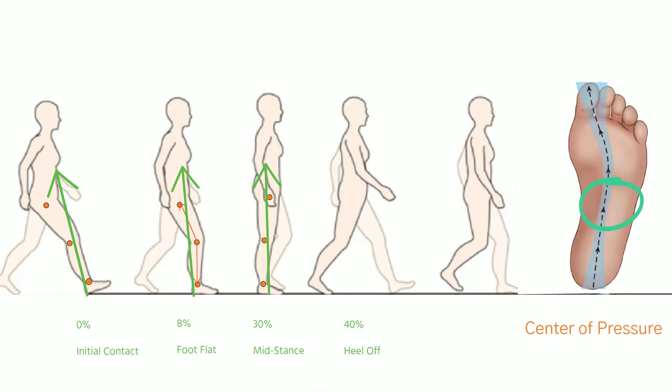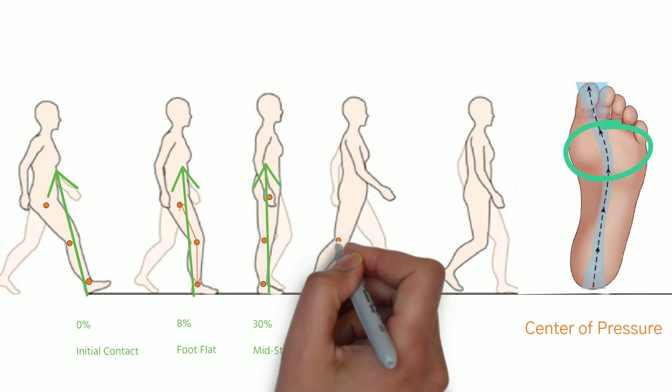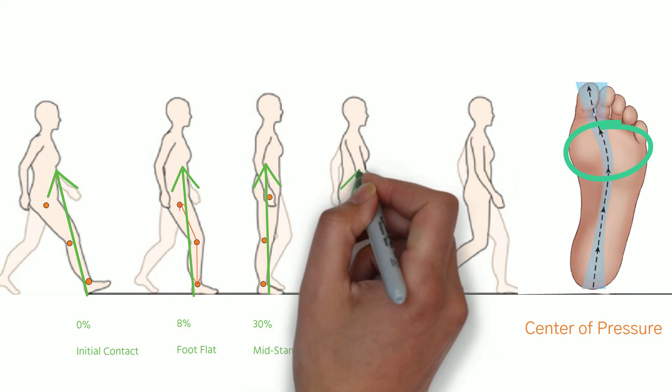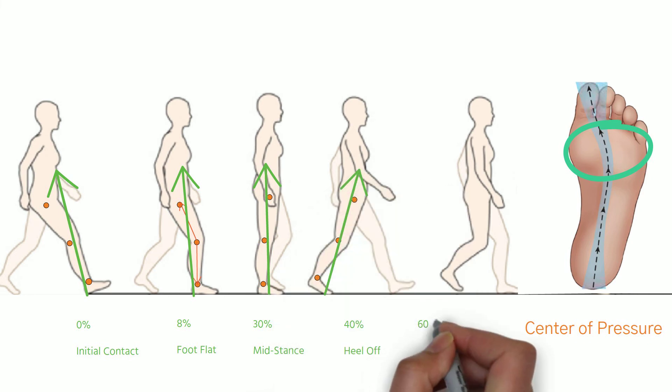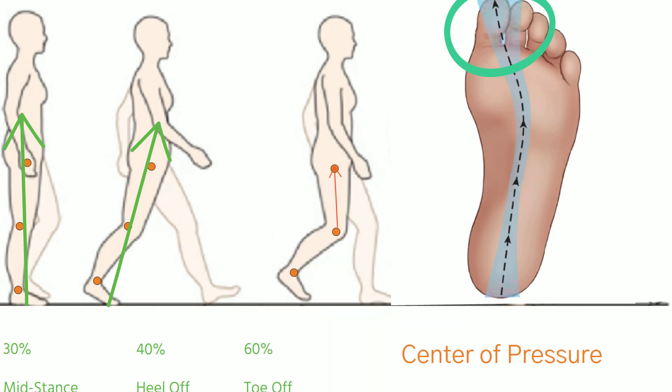Following mid stance, the ground reaction force does not change for the ankle or the hip. It continues to travel anterior to the ankle and posterior to the hip. While the only change that occurs is at toe-off for the knee joint. Because the knee moves into flexion, ground reaction force moves posterior to the joint line.